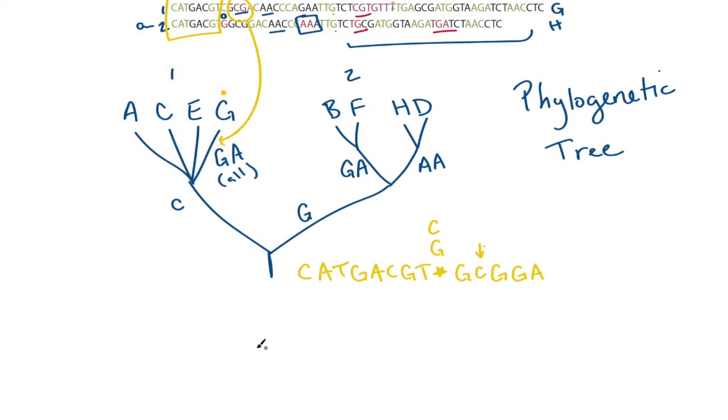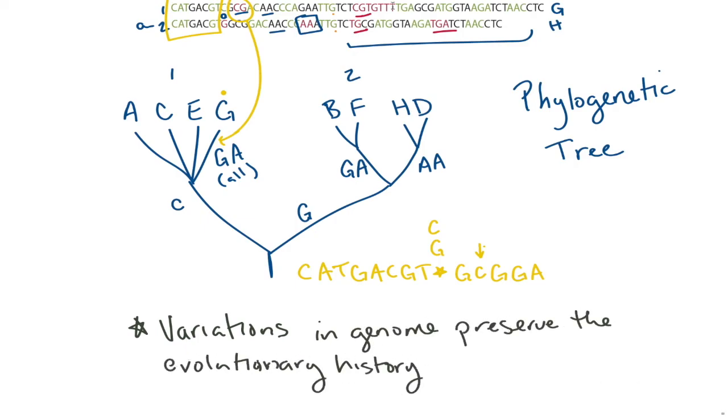So the general idea I want you to come away with is the thought that the variations in the genome preserve the evolutionary history. Phylogenies can also be constructed from the morphological characteristics of fossils. And the key is to look at the organisms, see what the similarities are, and try to reconstruct the evolutionary history. So thanks for watching.